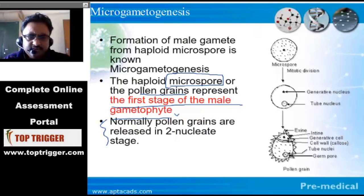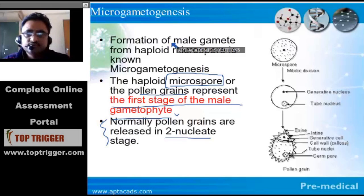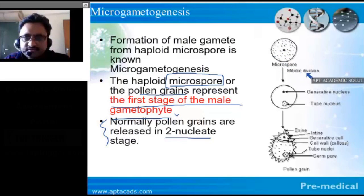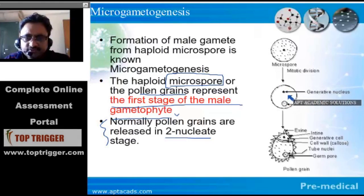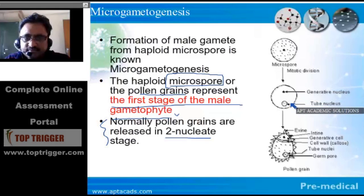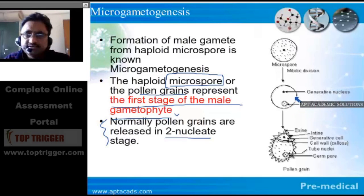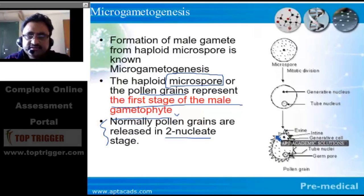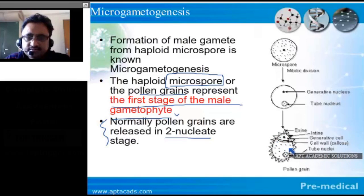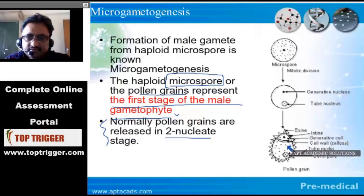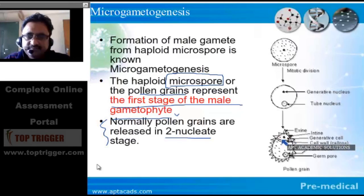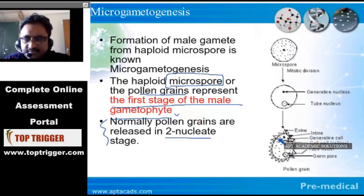Pollen grains are normally released in a two-nuclei stage. The microspore undergoes one mitotic division, and as a result two cells are formed: one is the generative nucleus and the second is the vegetative nucleus — also called the tube nucleus. This structure later develops into the pollen grain. The outer layer is the exine and the inner layer is the intine. There is a larger vegetative cell whose nucleus is called the tube nucleus, and a small generative cell. Between them there is a cell wall made up of callose.